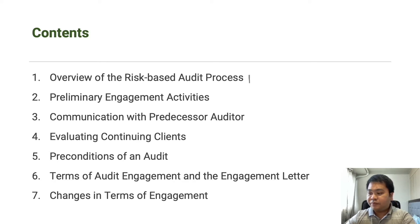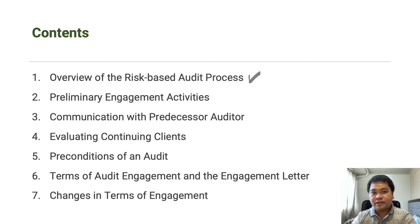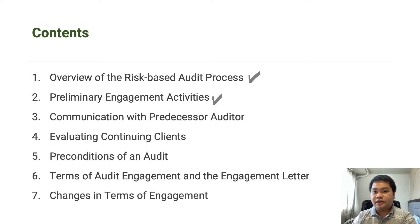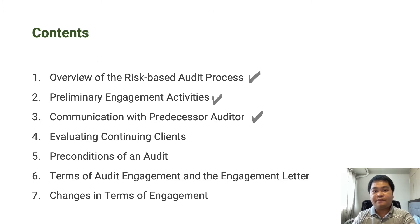In this video lecture we will discuss the following items. First, we have an overview of the risk-based audit process, which we have already seen in the previous video lecture. We will review it for the purposes of determining where we are in the roadmap of the audit process. Then we will discuss in detail the preliminary engagement activities of the auditor — the steps an auditor performs before accepting an audit engagement from a client.